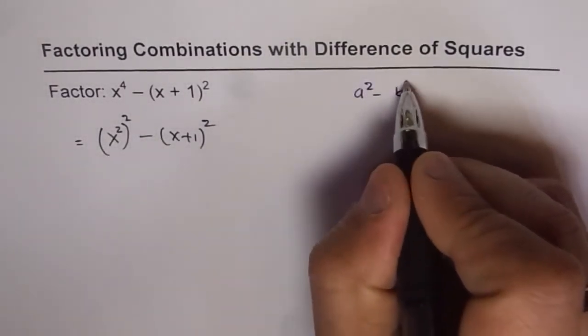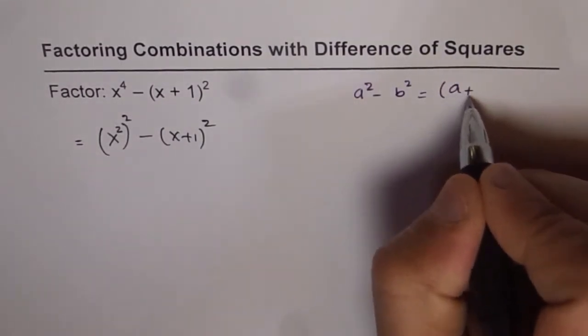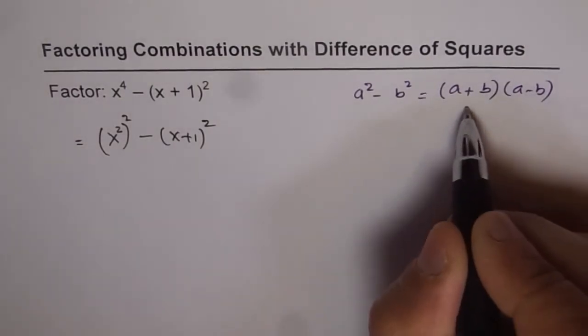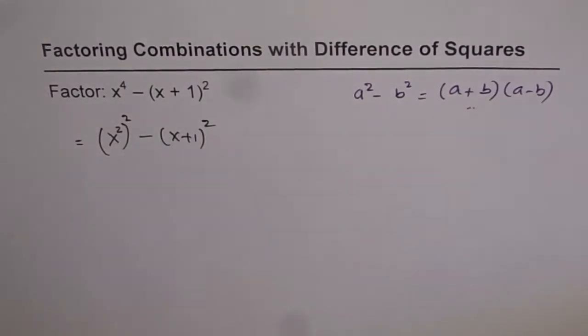a square minus b square which is difference of squares can be factored as a plus b times a minus b. So repeatedly apply this technique here.